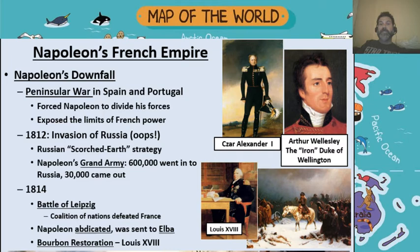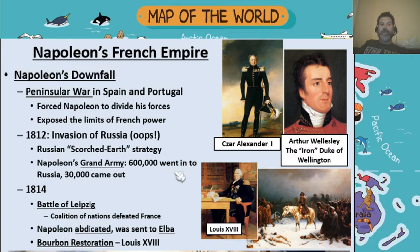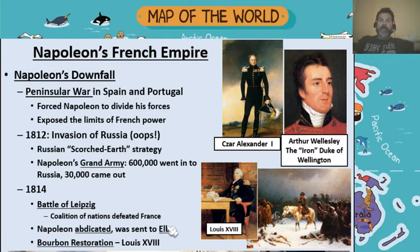Then, finally, in 1814, there was a final battle at a town called Leipzig in Germany. A coalition of nations — including the British, the Prussians, and the Austrians — defeated France. The French army really was not able to recover from the disaster in Russia to the point where they could effectively defend themselves against this coalition. This was the first great final defeat of Napoleon's career. He abdicates, gives up his throne, and is sent to the island of Elba off the coast of Italy, basically to be imprisoned there.